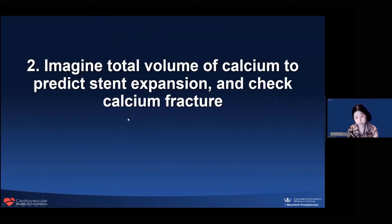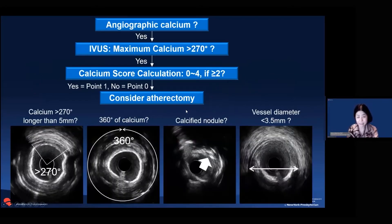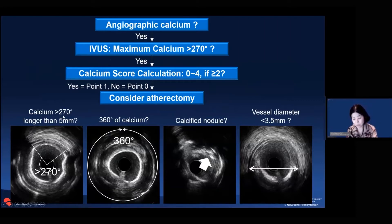The second topic: if you want to predict how well a stent will expand in a calcified region, you really need to imagine the total volume of calcium. We developed a calcium score. First, we look at the angiographic appearance. If angiographic calcium is present, we measure the calcium angle at the site of maximum calcium. If the angle is more than 270 degrees, we calculate the calcium score. Components include: angle more than 270 degrees with length more than 5mm, indicating a very diffuse, long calcified region, scoring 0.1.